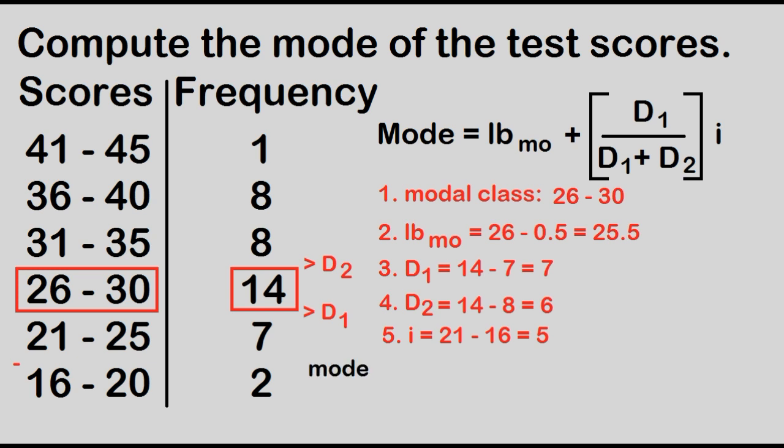Now we can find the mode by substituting these values. Mode is equal to 25.5 plus the quantity 7 over 7 plus 6 times 5.